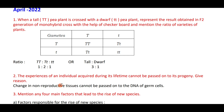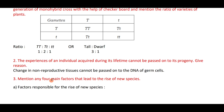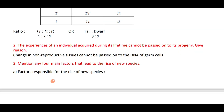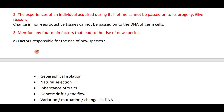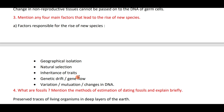The experiences of an individual acquired during its lifetime cannot be passed on to its progeny. Give reason: changes in non-reproductive tissues cannot be passed on to the DNA of germ cells. Mention the four factors that lead to the rise of new species: geographical isolation, natural selection, inheritance of traits, genetic drift or gene flow, and variation or mutation or changes in the DNA. These are the reasons for speciation or the evolution of new species.